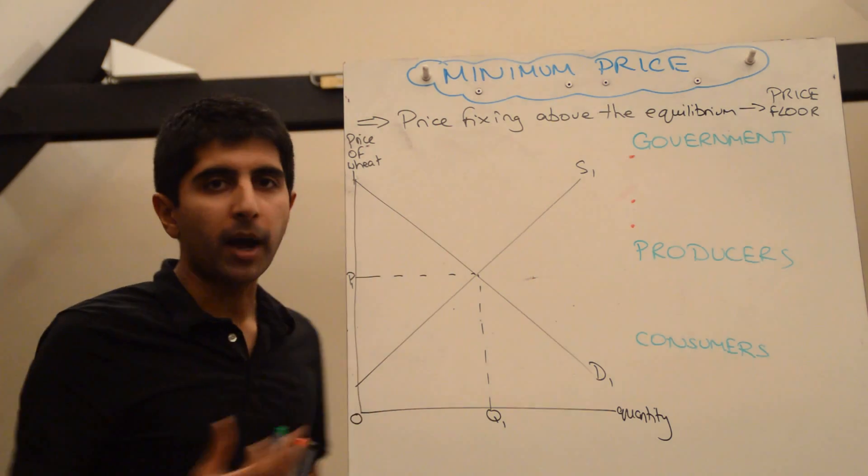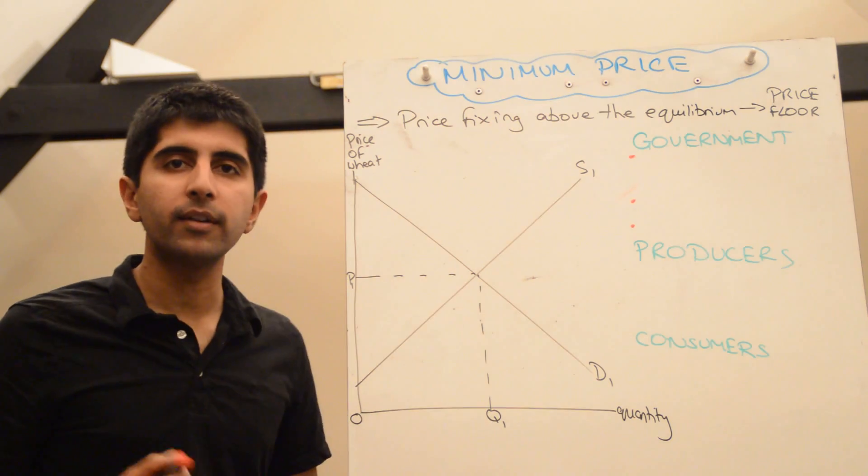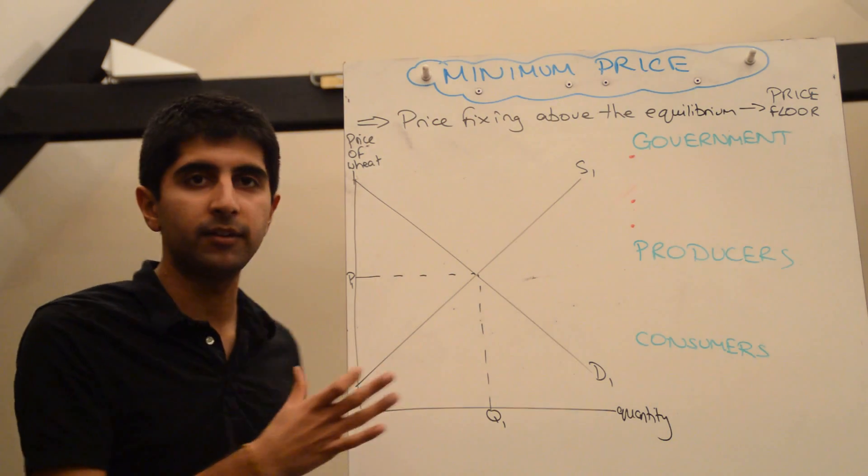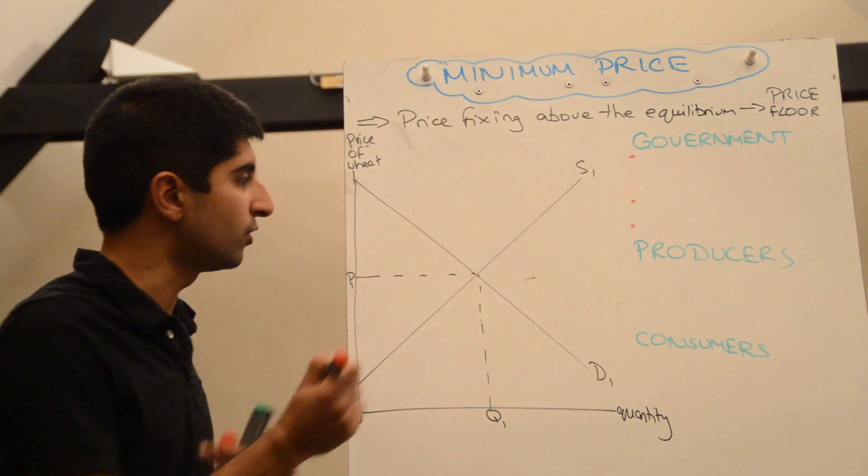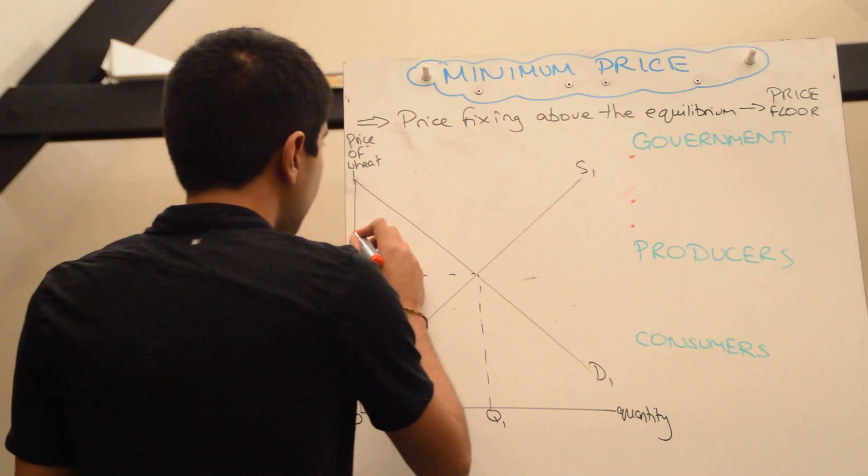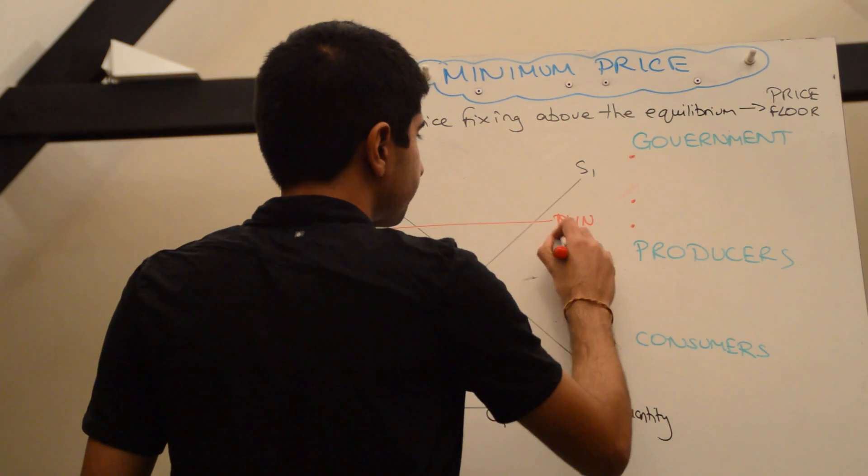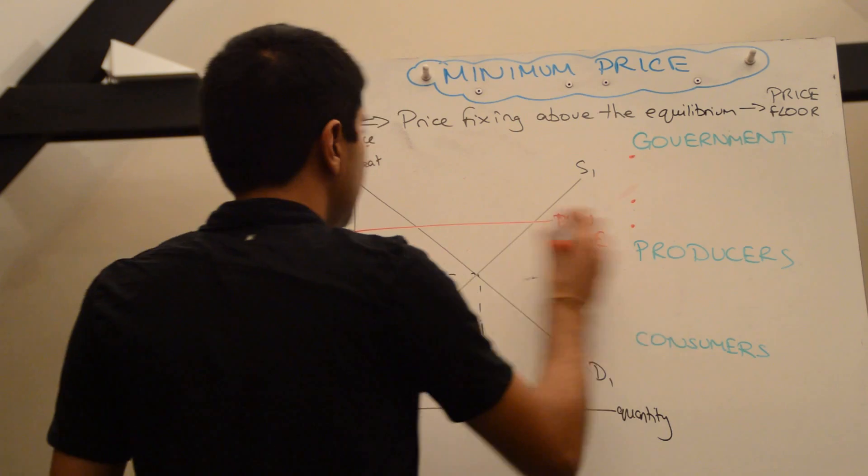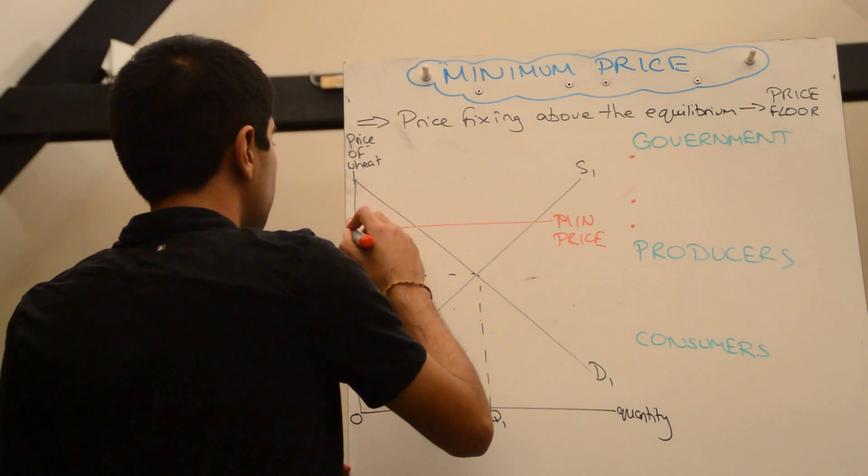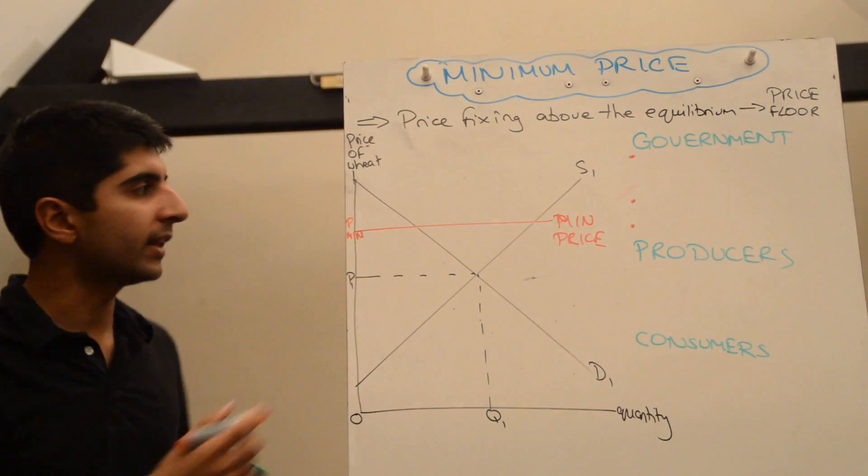Let's take the wheat market as an example, and let's say a minimum price is imposed above the equilibrium price in the market to support the incomes of producers. Let's say that minimum price is set here, and let's call that PMIN.